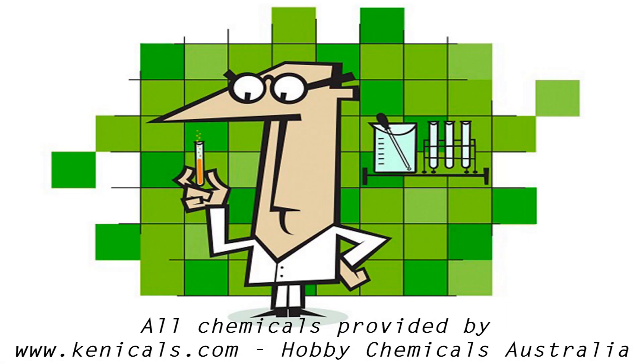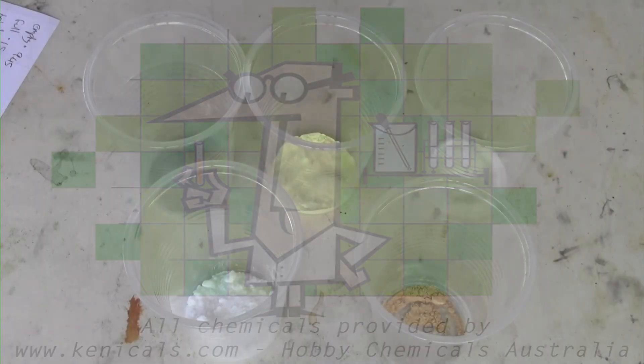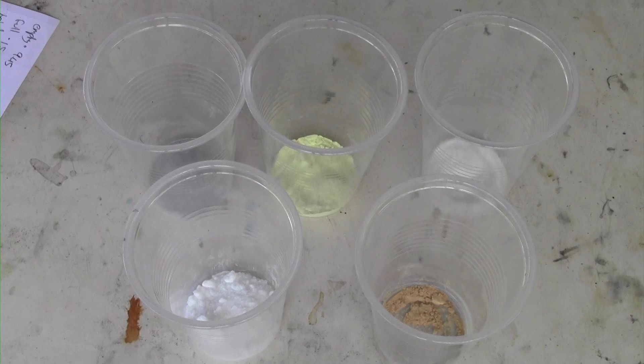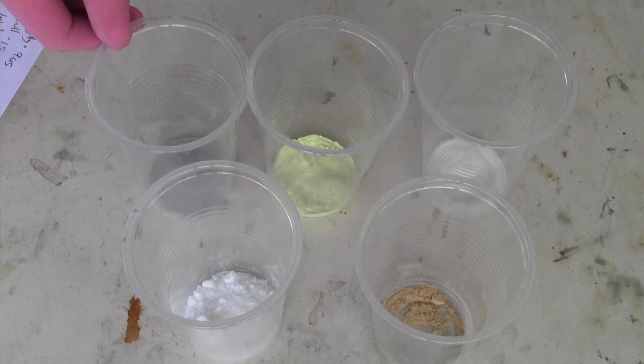All chemicals provided by Chronicles.com, Hobby Chemicals Australia. A Strobe Pot is a pyrotechnic composition which is made up of two types of compositions.